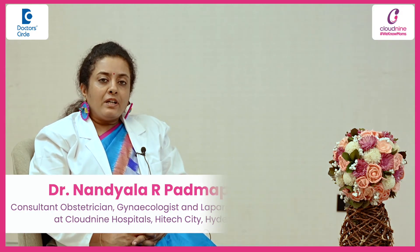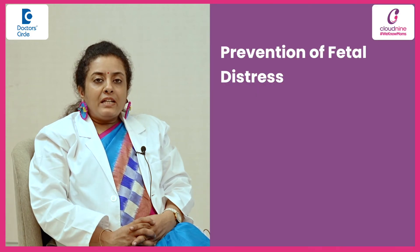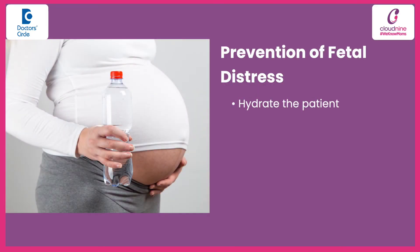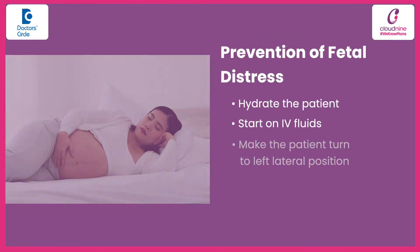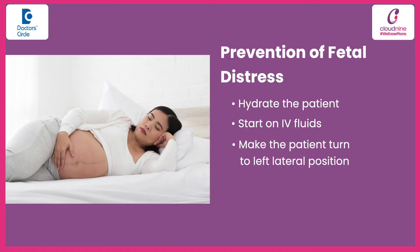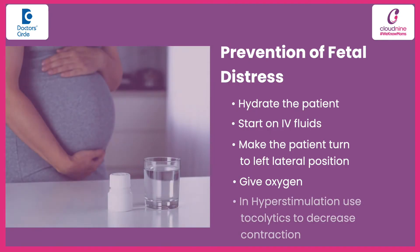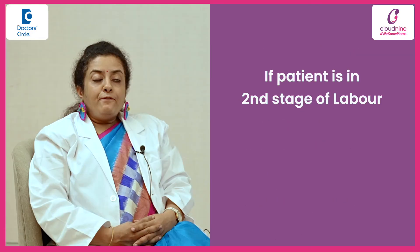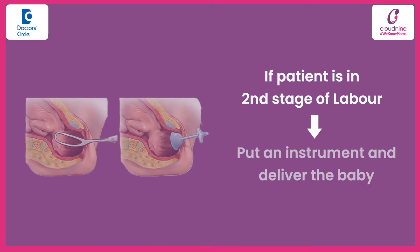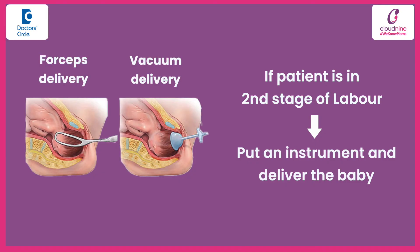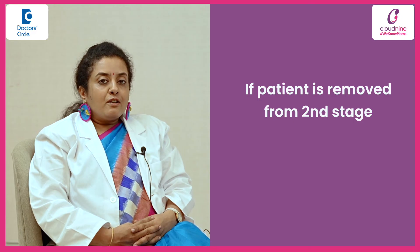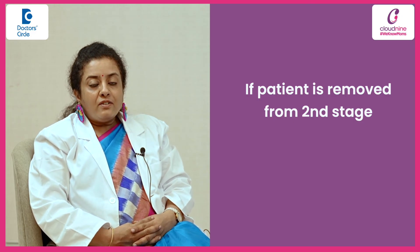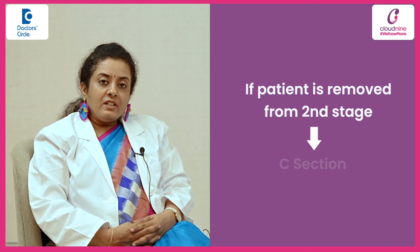Before that, there are a few correctable factors. We can hydrate the patient, start IV fluids, make the patient turn to left lateral position, give some oxygen, and find out the cause — like using tocolytics to reduce the contractility of the uterus. If the patient is in the second stage, we can use an instrument to deliver the baby, either forceps or vacuum. If the patient is still removed from the second stage, we can go ahead with a C-section.